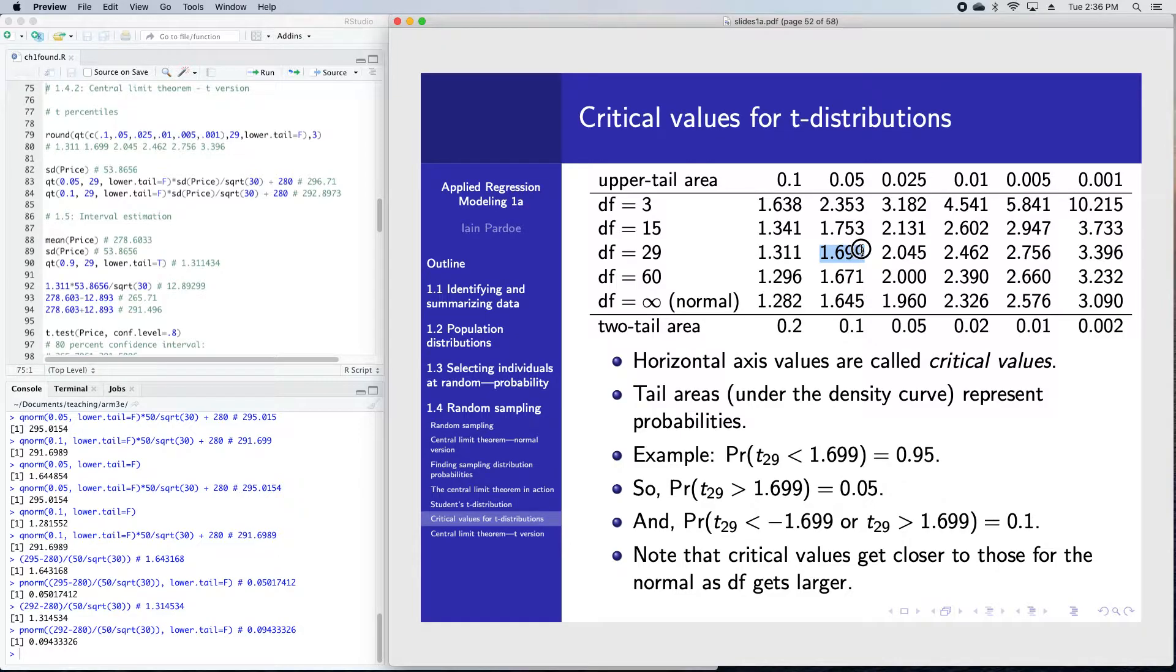If we go out a little further in the tail to 1.699, the tail area would only be 0.05. If we went all the way to 2.045, the tail area would be 0.025, and so on.